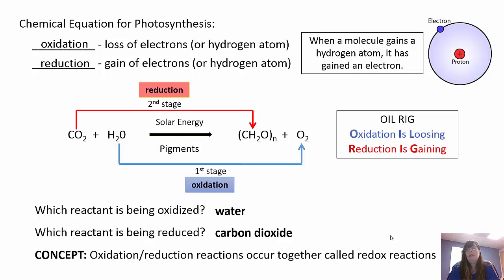The oxygen given off in photosynthesis comes from the splitting of water — that's very important. Most people assume the oxygen comes from the carbon dioxide because CO2 goes to O2 and you just lose the carbon, but that's not how it works. Water is actually split; those hydrogens are then used to fuel photosynthesis, and the oxygen is given off as a byproduct. So water is being oxidized — it's losing that hydrogen — and carbon dioxide is being reduced — it's gaining that hydrogen.